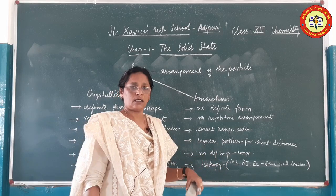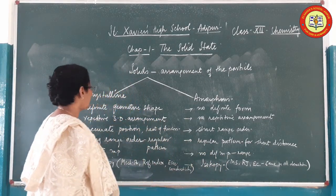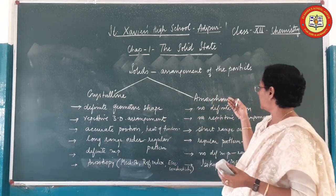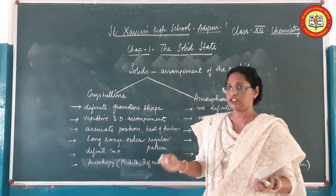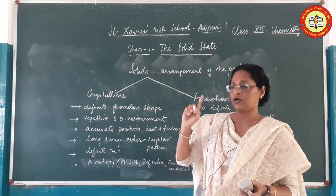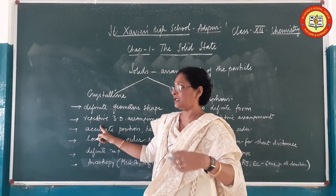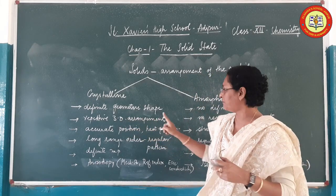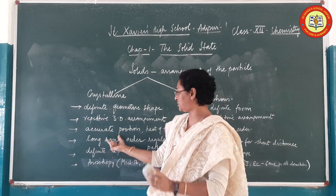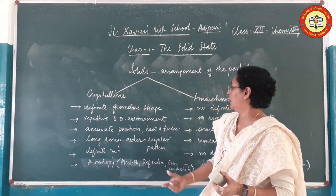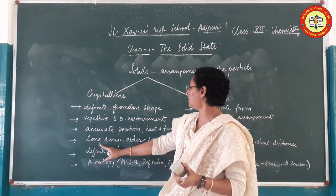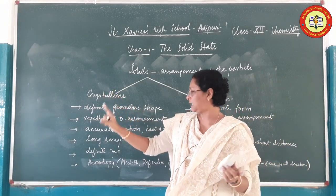We can classify a given solid into two different categories: one is the crystalline solid and the other is the amorphous solid. A crystalline solid will have a definite geometric shape. The shapes are repetitive — you will find that the structures are repetitive with a 3D arrangement. These particles have an accurate position, and because it is repetitive for quite a long range, we say that it has a long range order. Long range order means it follows a regular pattern for a long distance.